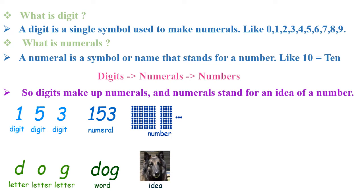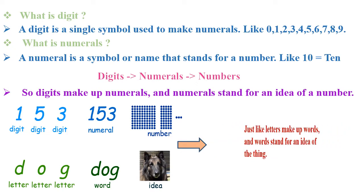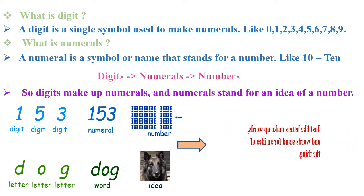For example, if we write down D, O, G individually, they are known as letters. But if we write them all together, it becomes the word DOG. Just like letters make up words, and words stand for an idea of a thing — digits make up numerals and numerals stand for an idea of a number.